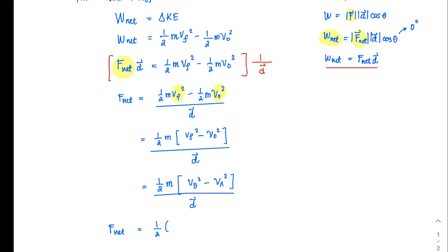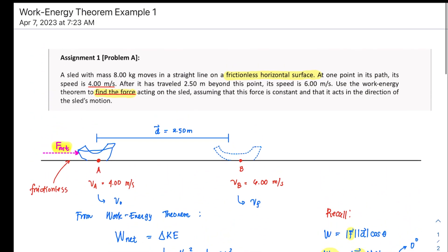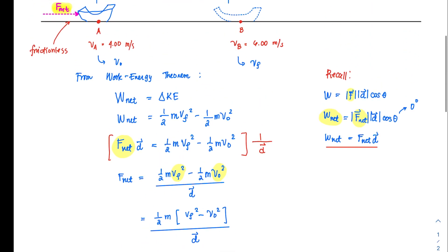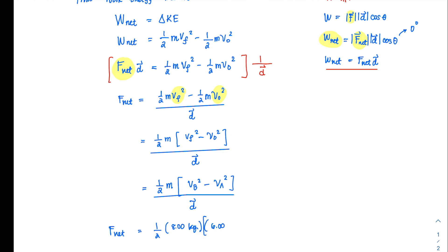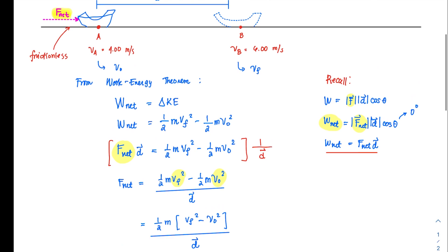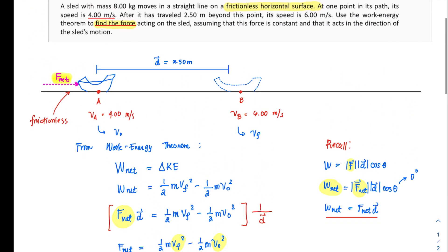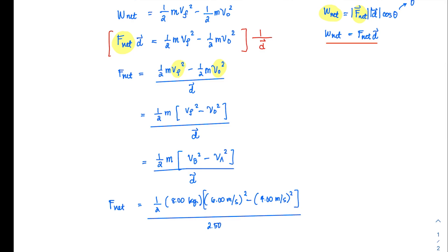So one half, the mass as given in the problem is eight kilograms. So eight kilograms, you multiply that one with the final velocity, which is given at six meters per second. And then do not forget that that is squared minus the initial velocity, which is at four, or given at four meters per second. And do not forget again to square that one. And everything is divided by the displacement d, which is 2.50 meters.